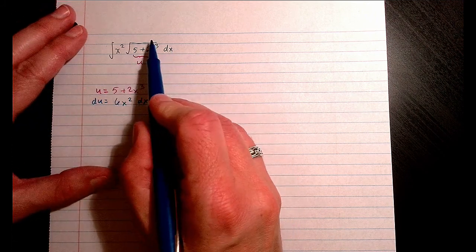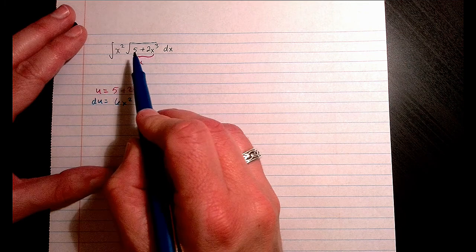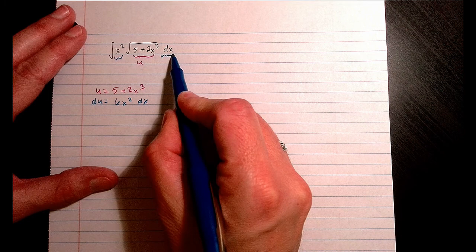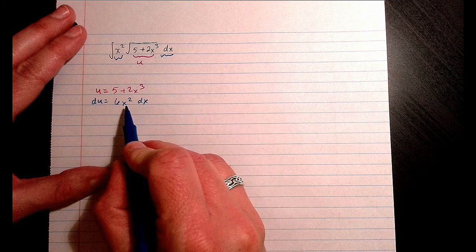So u is inside this radical, so the radical is going to get stuck with you, so ignore that. So what is outside of it? I have an x squared, and I have a dx. Okay, look. I have an x squared and a dx. Sweet.